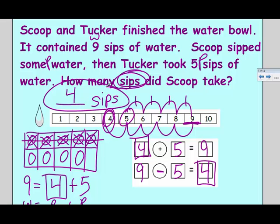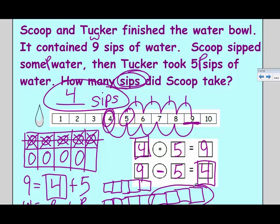You could use many different models. You could use linking cubes to draw this situation. I could draw five linking cubes and nine linking cubes. And that would show me, I want to make sure they match up perfectly. And again, that's going to show me my difference of Scoop's four sips. You could use a five group, a ten frame, or linking cubes. But we want to show some model.